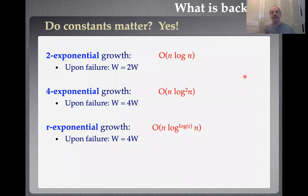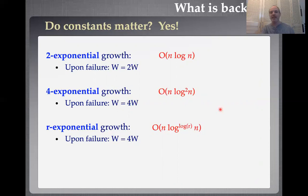You might ask: what if I wanted to do 4-exponential backoff, growing by a factor of four, or r-exponential backoff? That only makes things worse — backing off faster is actually a problem. Four-exponential backoff gives you N log² N running time, and it just keeps getting worse as you increase r. Basically exponential backoff is already backing off too fast, and making it even faster only hurts you.